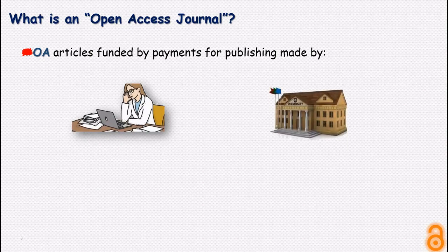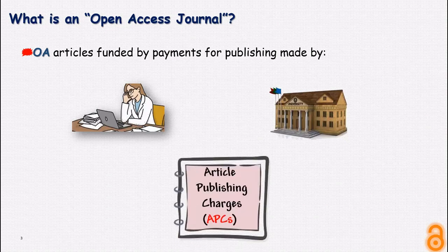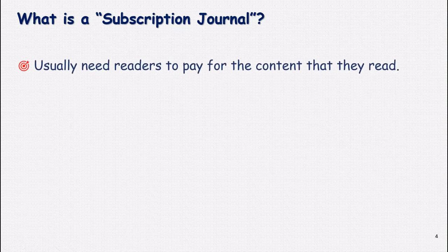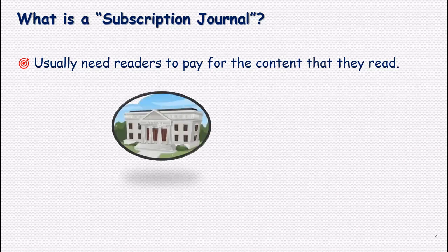These payments are commonly known as article publishing charges, which we call APCs. Therefore, in the open access model, readers are not charged. Now, what is a subscription journal? Subscription-based journals usually require readers to pay for the content that they read, since interested institutions or individuals have to pay a subscription fee.